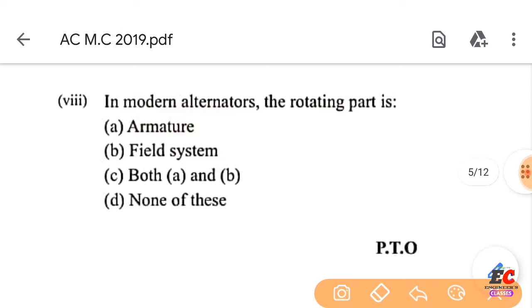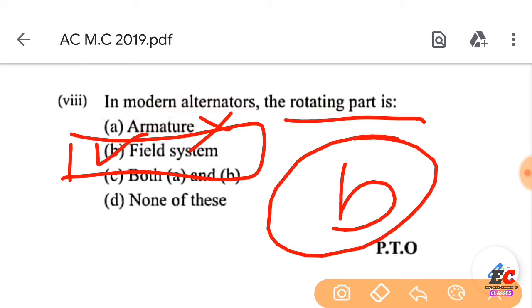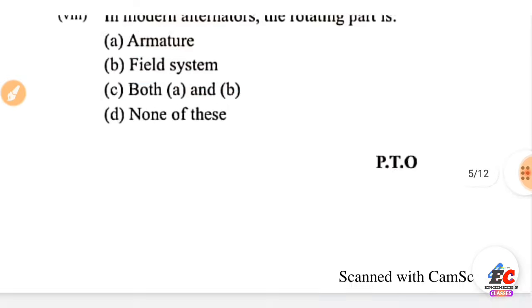In a modern alternator, the rotating part — what happens? The rotating part is the field system. That is the right option B.